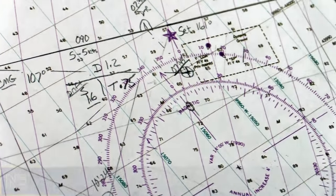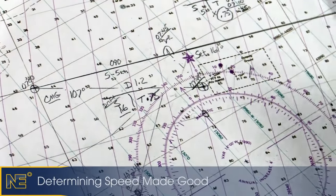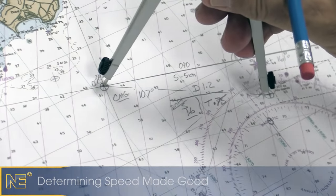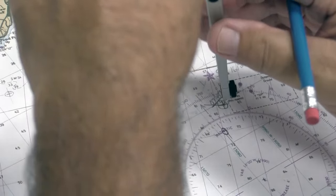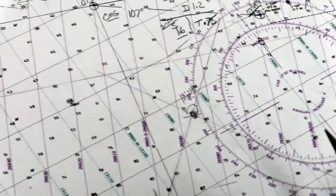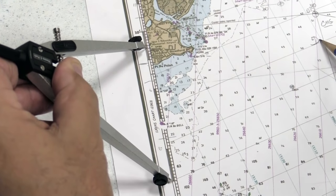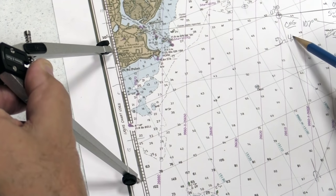The next thing we can determine is our speed made good, how fast did we actually travel. Again, we're going to have to find the distance we traveled over 45 minutes. Determine that by the side of the chart, and we find out that that distance is equal to 4.4 nautical miles.